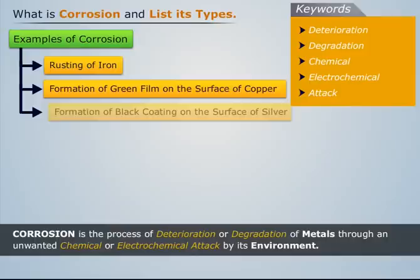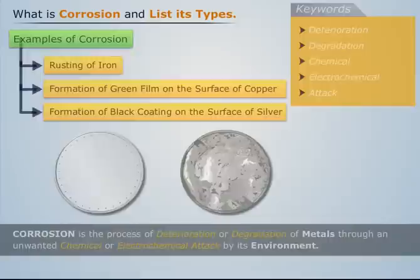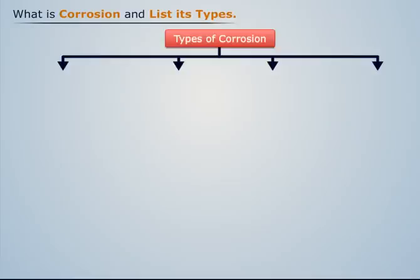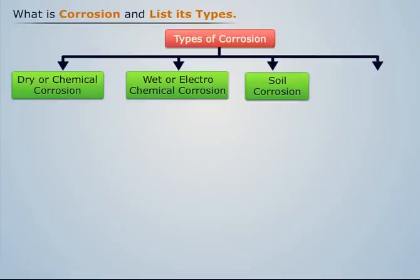Also, when silver is exposed to the atmosphere, a black coating is formed. Basically, corrosion of metals can take place in various ways, and on this basis, corrosion processes are classified as: dry or chemical corrosion, wet or electrochemical corrosion, soil corrosion, and other forms of corrosion.